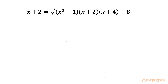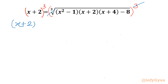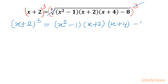Let us get started by cubing both sides — raising each side to the power 3. We can then cancel the cube root with the cube, so the equation becomes: (x plus 2) whole cube equal to (x squared minus 1)(x plus 2)(x plus 4) minus 8.